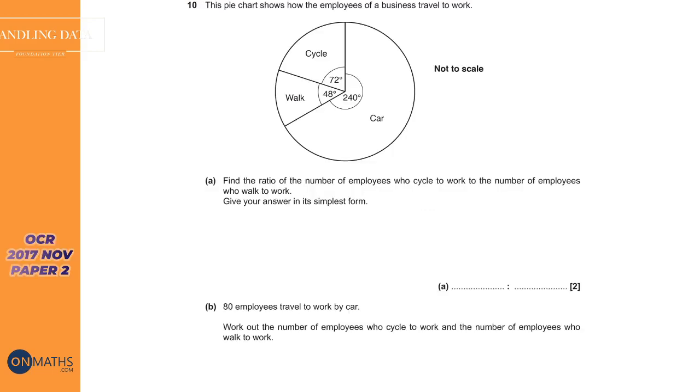Last up will be our OCR offering, and this will be pie chart this time. So we've hit the main charts and graphs and whatnot of the topic. So this first one says, find the ratio of the number of employees who cycle to work compared to the number of employees who walk. So we do a basic ratio first. So cycle is 72, and walk is 48, and then we've got to cancel them. So we put our lines in.